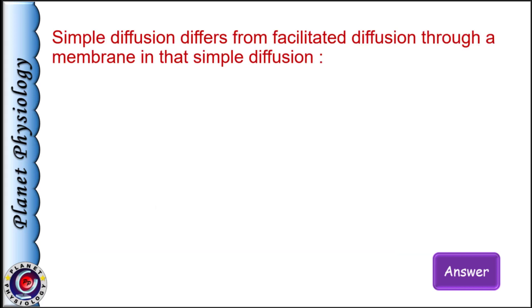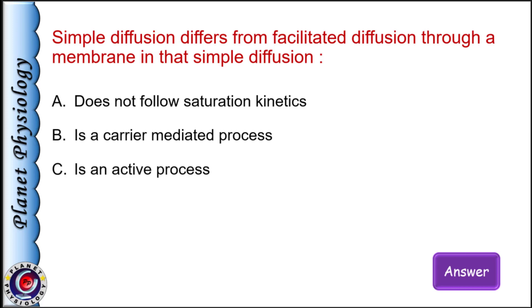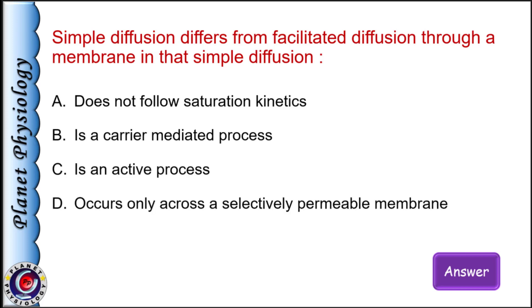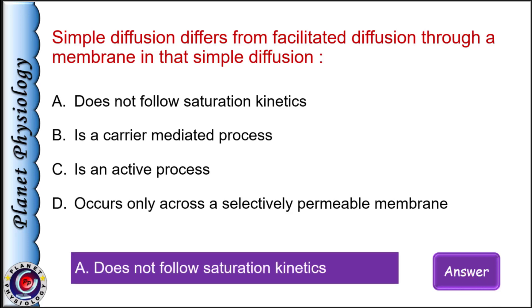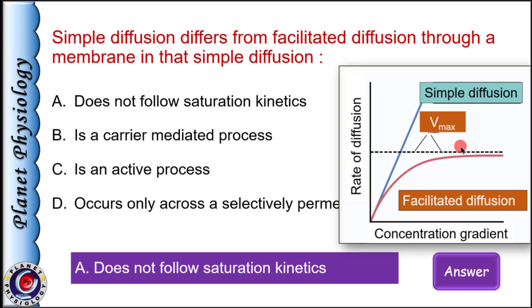Simple diffusion differs from facilitated diffusion through a membrane in that simple diffusion: a) does not follow saturation kinetics, b) is a carrier-mediated process, c) is an active process, and d) occurs only across selectively permeable membranes. The answer is a) it does not follow saturation kinetics. Saturation kinetics or Vmax is applicable only for carrier-mediated transport, that is active transport and facilitated diffusion.